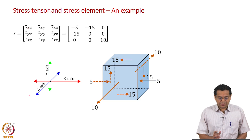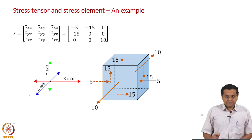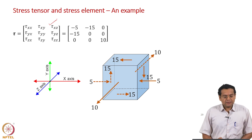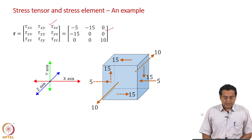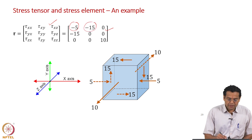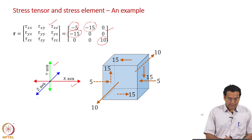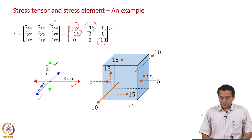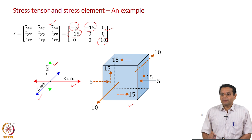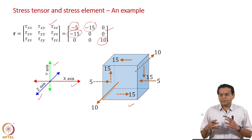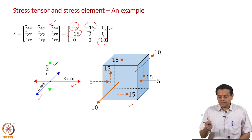Now a numerical example to understand the sign convention. Here is the stress tensor, or stress matrix, with numerical values. The τxx value is −5, τxy is −15, τyx is −15, and τzz is +10. We have x, y, and z axes, and what is shown is a stress element, not a control volume. Why do we choose a stress element? If it were a vector, we would represent it by an arrow. But since we want to represent all 9 components pictorially, we use a stress element.